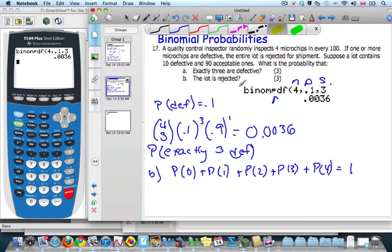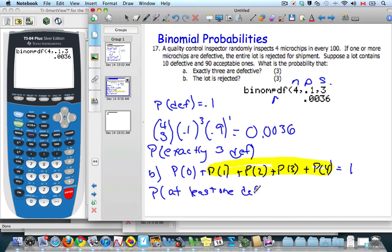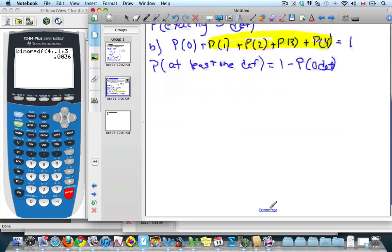For the lot to be rejected, I'm going to have one or more. So that means all these probabilities added up. My calculator doesn't add the right side of that equation very well. It only does the left side. So another option I can do, I want the probability of at least one defective, which means the same as one minus the probability of 0 defective.